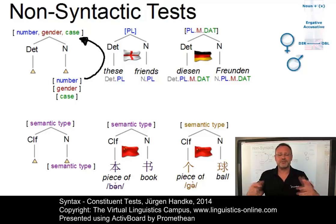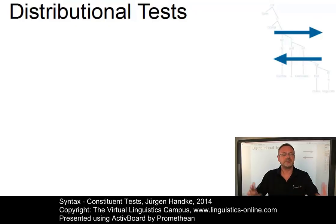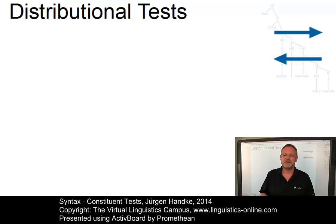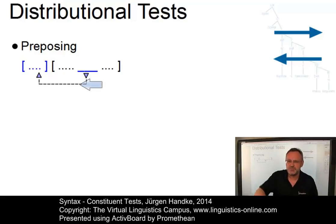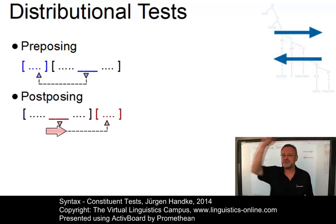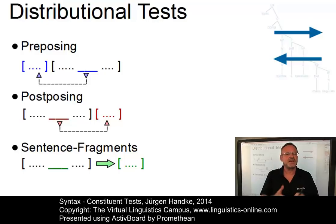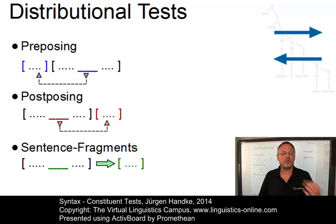Yet, the most important arguments in favour of constituents are syntactic. In fact, many of these syntactic arguments relate to the distribution of various sequences of words — that is, to the question whether a particular sequence of words has the same distribution as another phrase of the same type. Three types of distributional tests can be distinguished: the pre-posing test, where we move items to the front and test whether the result is grammatical; the post-posing test, where we move items to the back and test whether the results are grammatical; and the sentence fragment test, where we isolate parts of sentences and test whether they can stand alone. In summary, distributional evidence suggests that whole constituents and not just parts of constituents are in the focus of these processes.